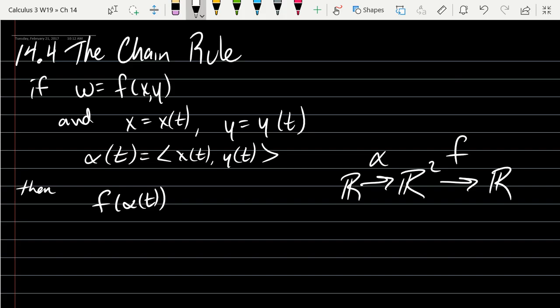So we're inputting one dimension, turning it into two dimensions, and then back out to one dimension. So what this means, f of α go from R¹ to R¹. So this composition has a regular derivative.